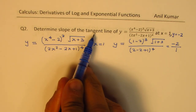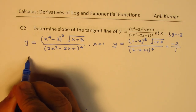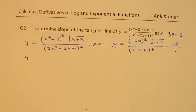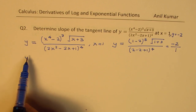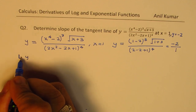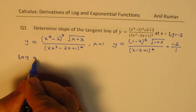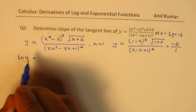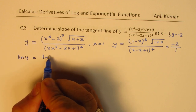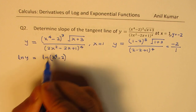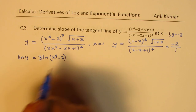Now let's find the slope of the tangent line, meaning the first derivative. When you are given an equation in this form, it is important to write it as a logarithmic function — so we take natural log of both sides. We get ln y equals ln of (x to the power of 4 minus 2) cubed, which brings down 3, plus half of ln(x plus 3) — since the square root is a power of half — minus 4 times ln(2x squared minus 2x plus 1).